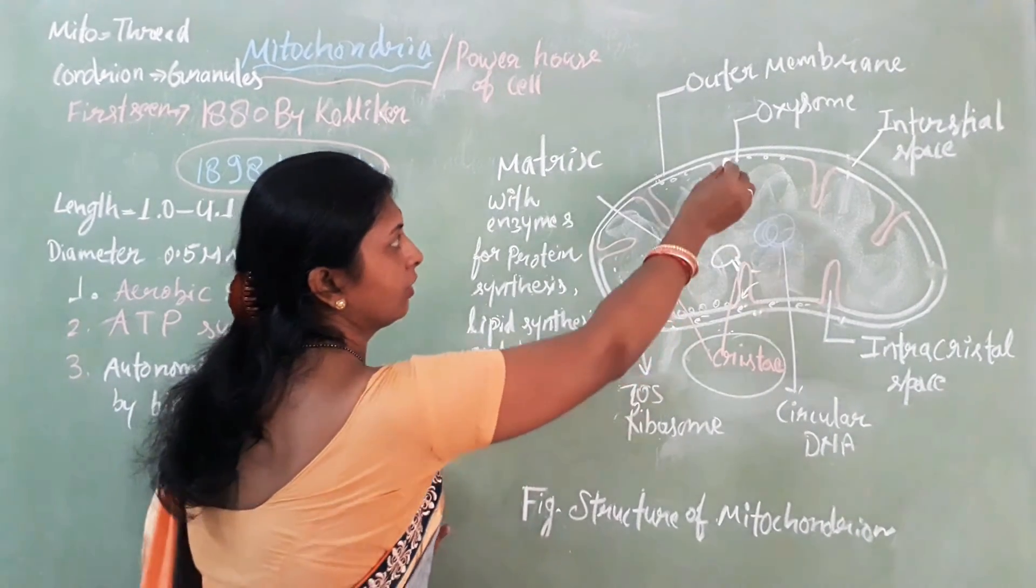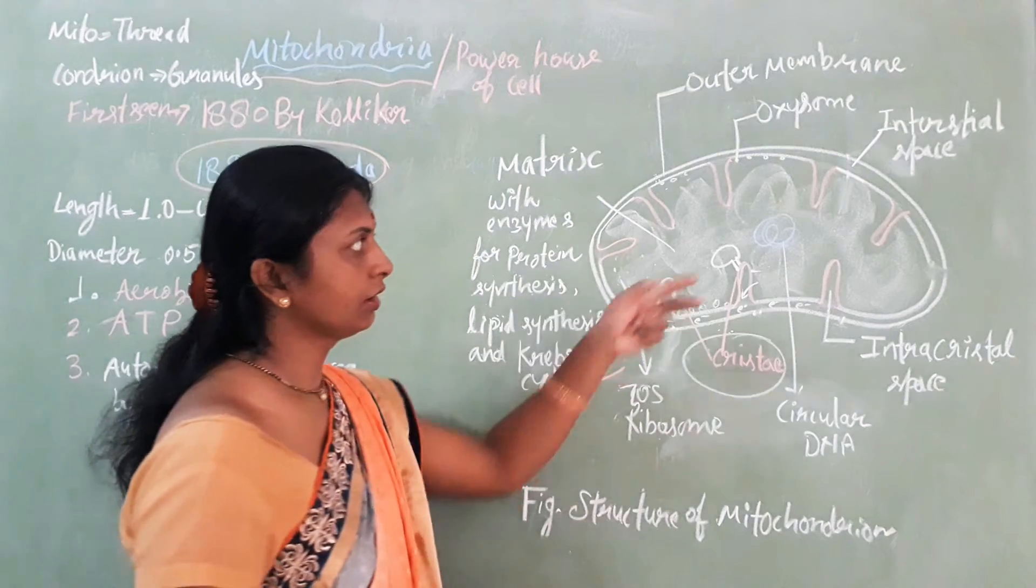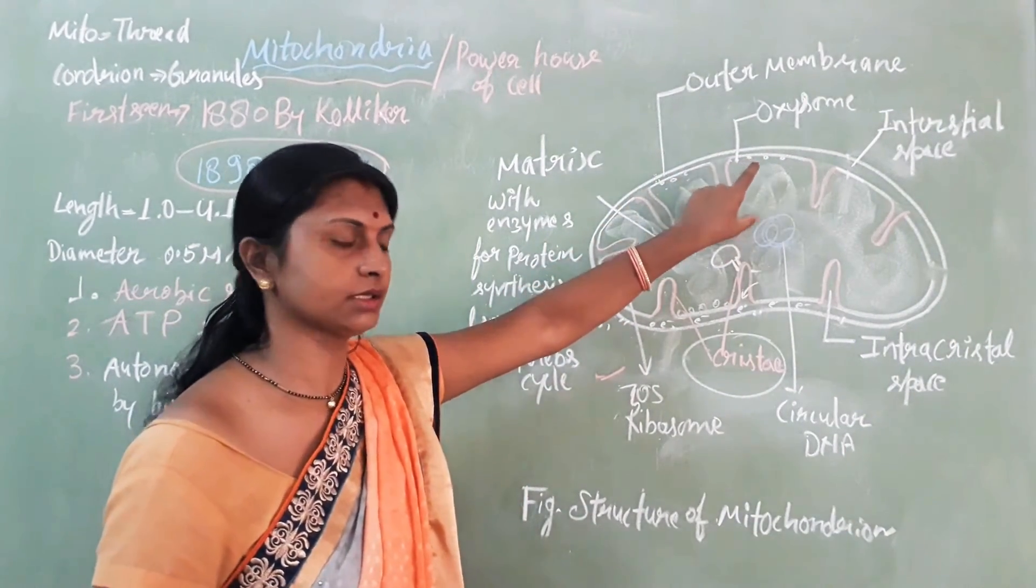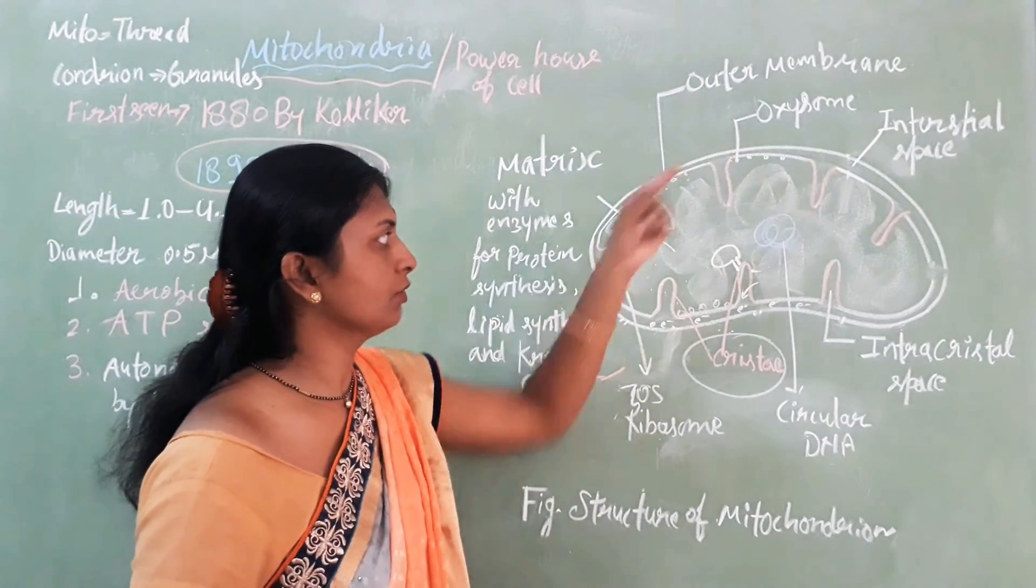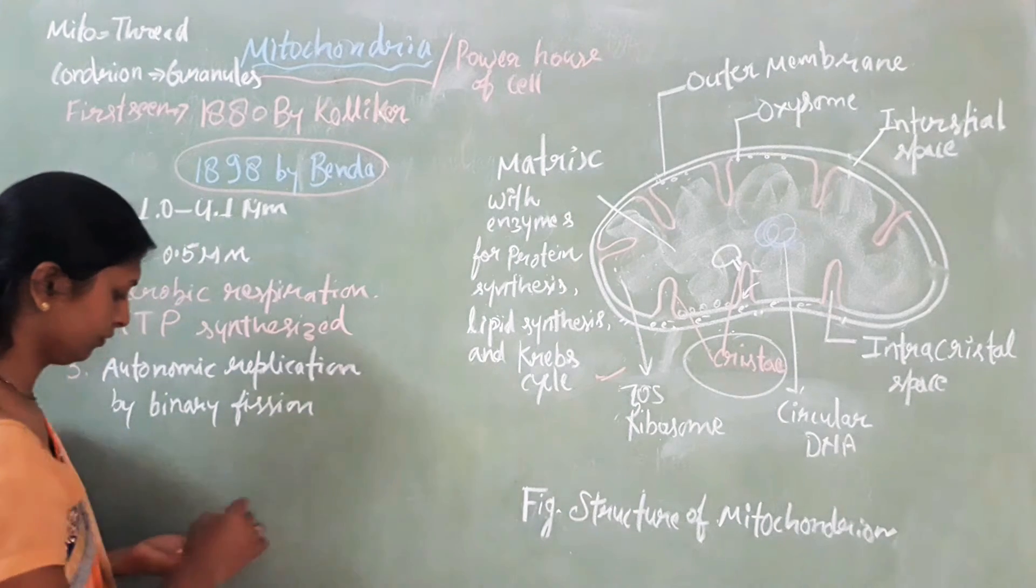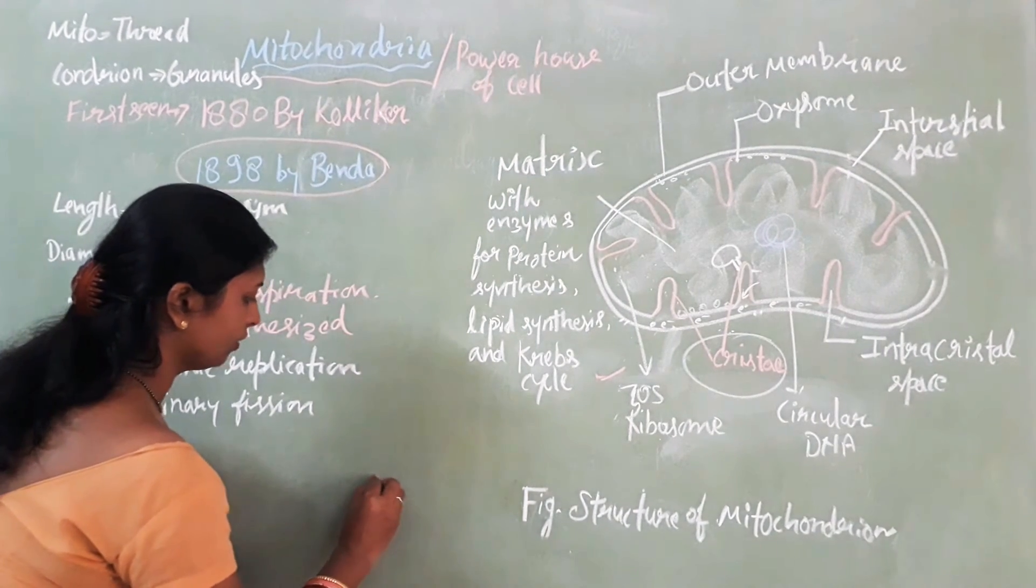Inside the mitochondria, on the inner membrane, oxysomes are present. These are the site for ATP synthesis. Let's see the large view of oxysomes.